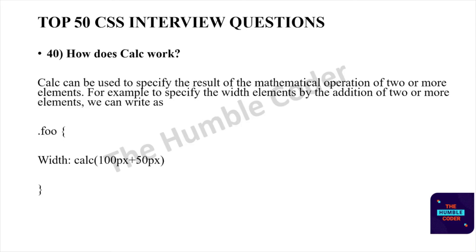How does calc() work? calc() can be used to specify the results of mathematical operations of two or more elements — for example, to specify the width of an element by adding two or more values. You write calc() with the calculation in brackets, mentioning the pixel values that need to be added.